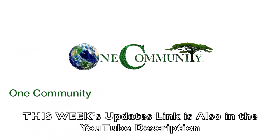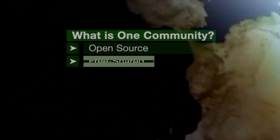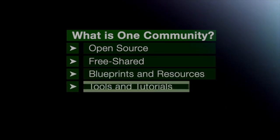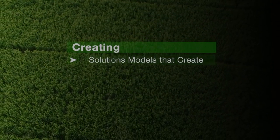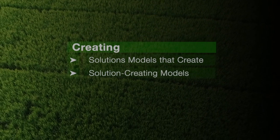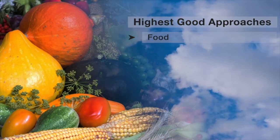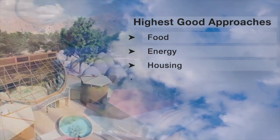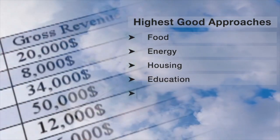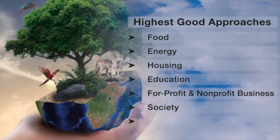One Community is a 501c3 nonprofit organization. We are creating open source and free shared blueprints and resources, tools and tutorials, and do-it-yourself instructions for highest good living. Creating solution models that create additional solution-creating models in the service of all life on this planet. This includes highest good approaches to food, energy, housing, education, for-profit and non-profit business creation, society, and true earth stewardship.